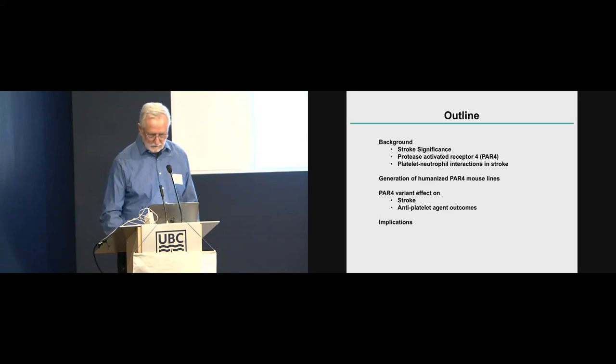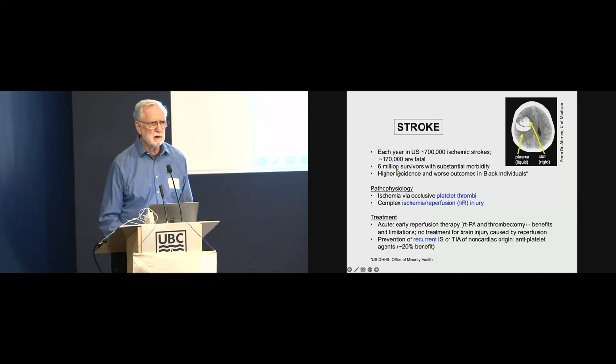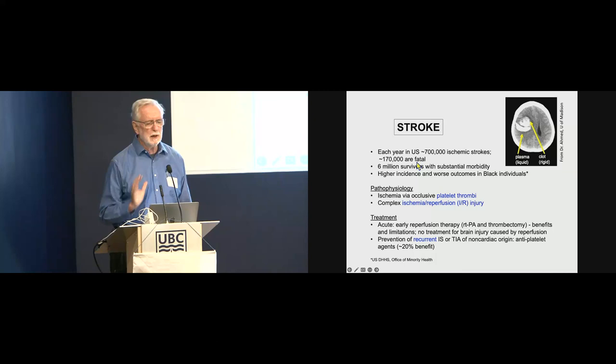Stroke. Everybody knows it's important. None of us wants to have one. There are 700,000 ischemic strokes in the U.S. every year with 170,000 deaths. Not everybody dies, which is why we have 6 million survivors of stroke with substantial morbidity. There is higher incidence and worse outcome in black individuals. I'm going to use the term 'black' throughout — black and white individuals, self-identified as such.